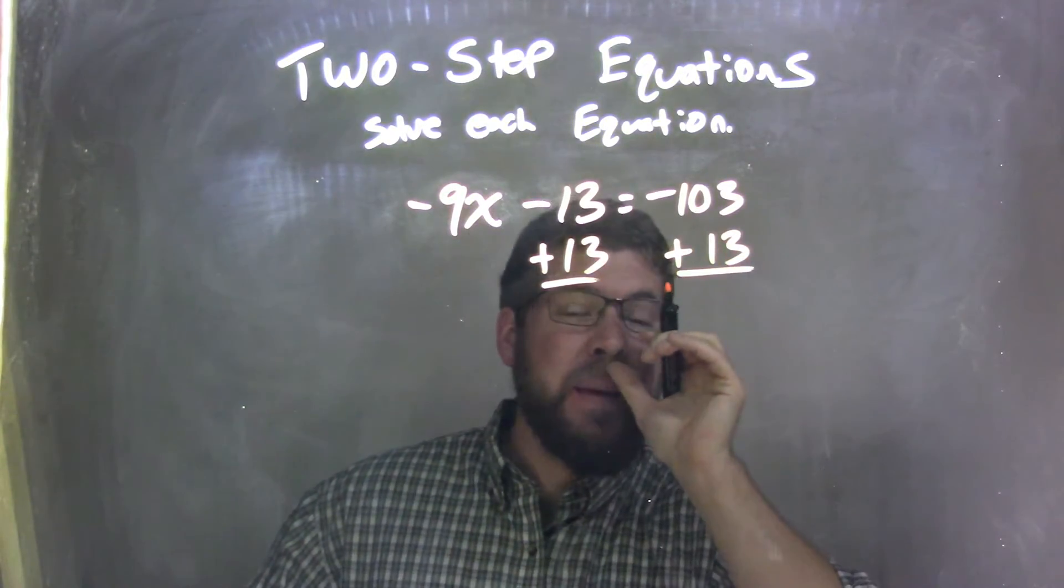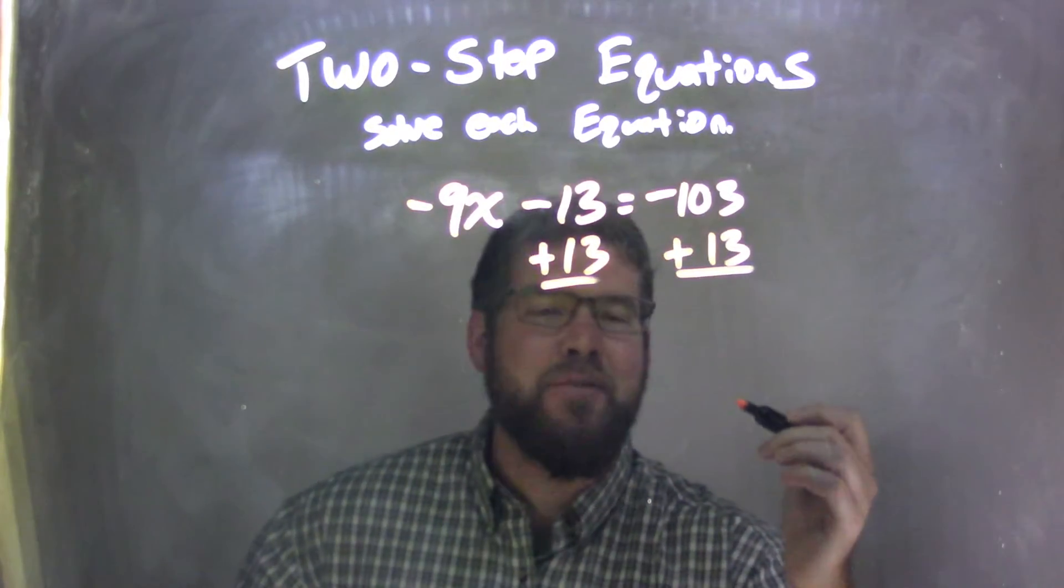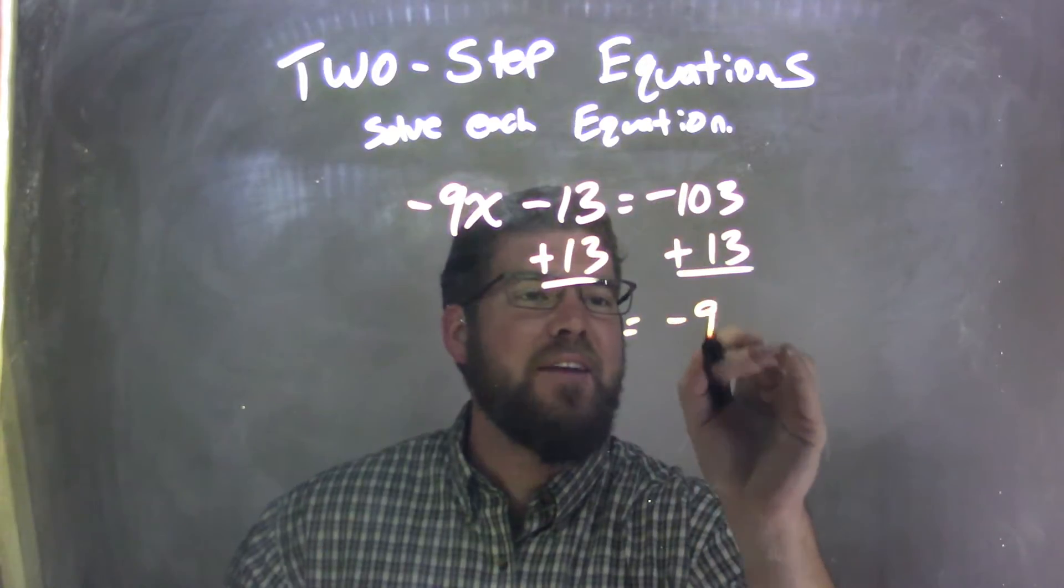But what does that come out to be? Well, negative 103 plus 13 comes out to be negative 90. Okay, negative 90.